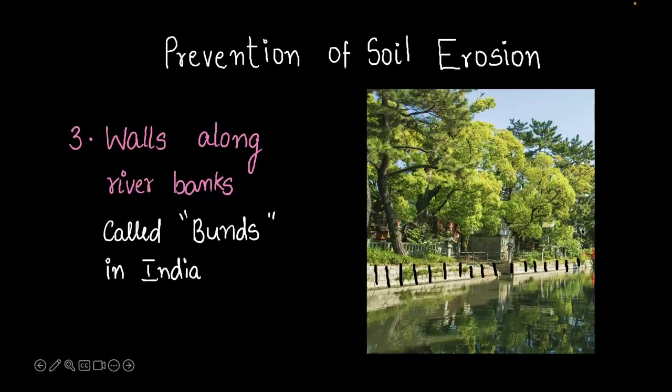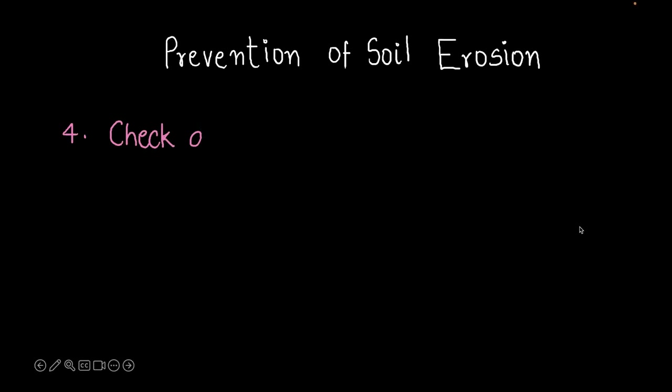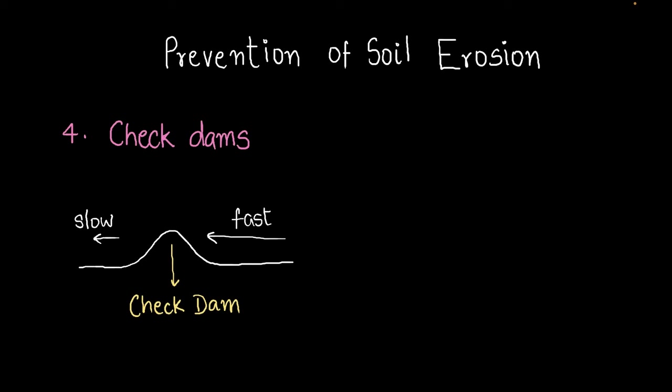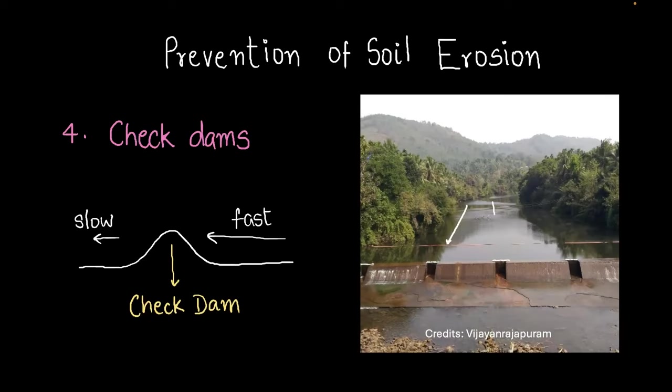This next example also deals with rivers causing soil erosion. These are called check dams. Let's try to understand what they are and how they work. If we have fast moving water in this direction and we want to slow it down, we can place a speed breaker of sorts, and then you'll see that the moment the water hits this structure it would start slowing down. And this structure is called a check dam. Let me show you an image. Here you can see that water is flowing down in this direction and it is flowing fast. The moment it hits that structure and moves down, it will slow down. And then slower water has less chances of soil erosion.